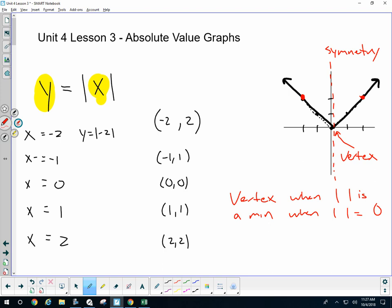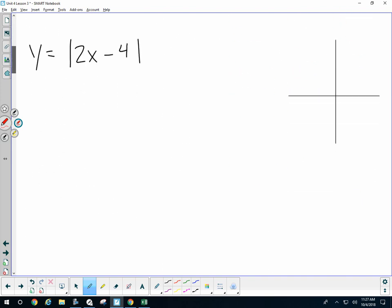So, let's look at some absolute values. The absolute value of 2x minus 4 equals y. Two things we need.